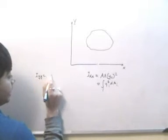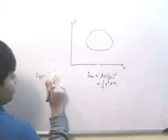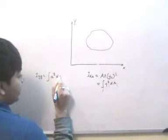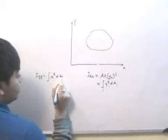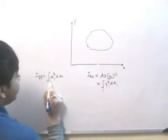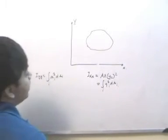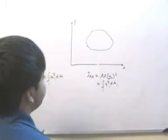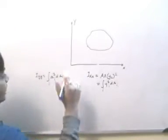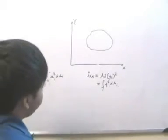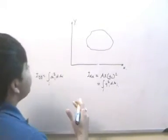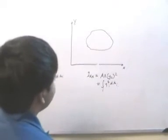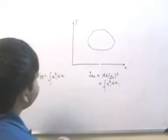And Iyy is equal to the integration of xi squared times dai, where i is any general point of the body. The integration of this over the whole body gives the moment of inertia about the x or y axis.